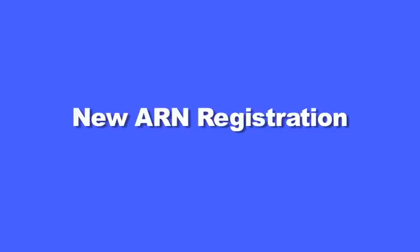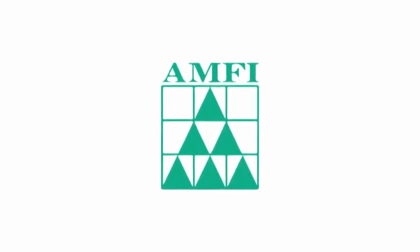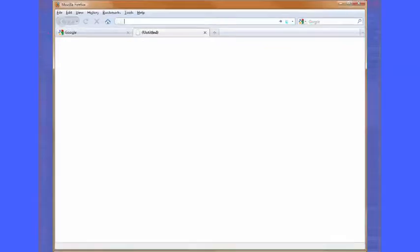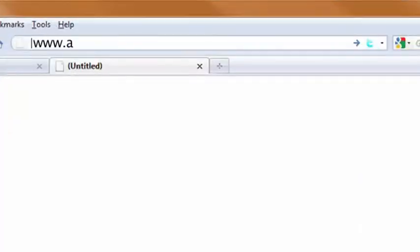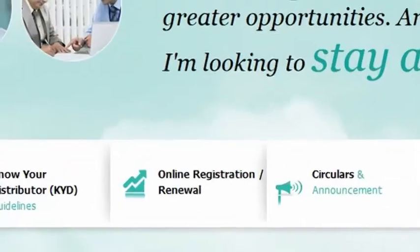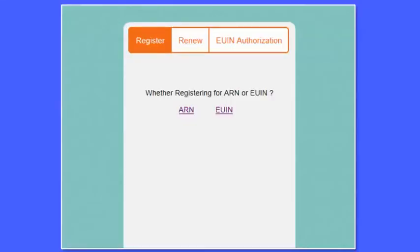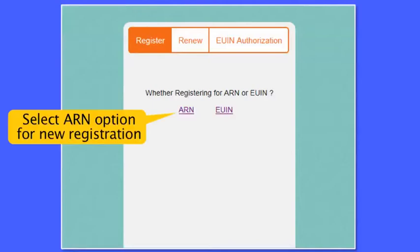To register a new ARN online, visit the MFI website at www.mfiindia.com. Go to the distributor corner and click on the online registration renewal tab. Click on the register button and choose the ARN option.